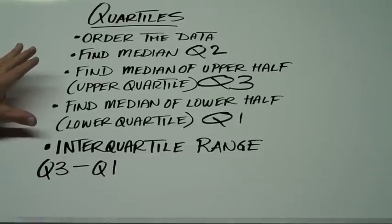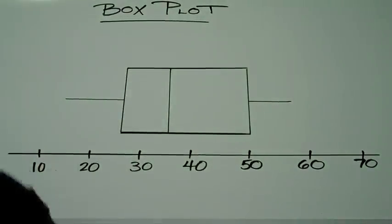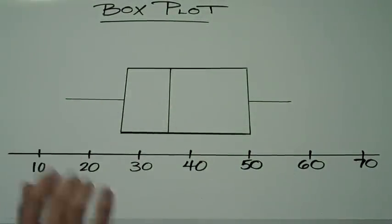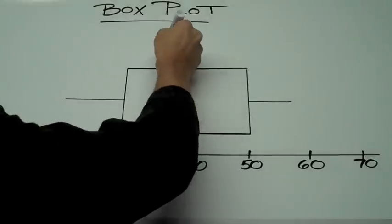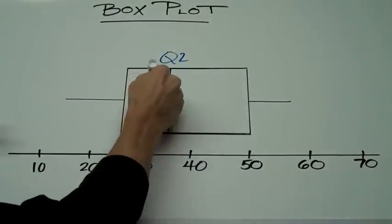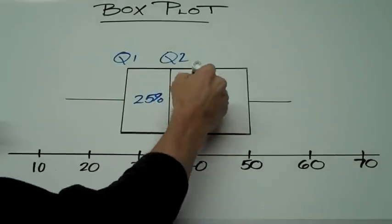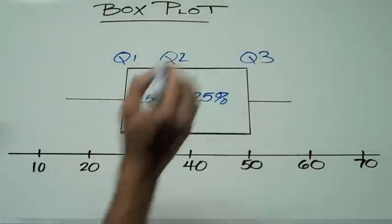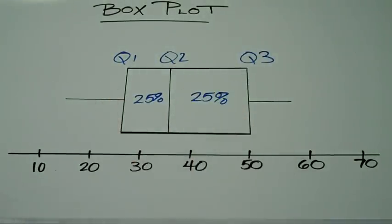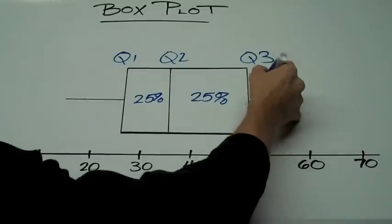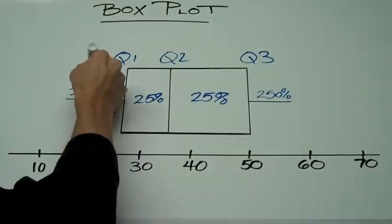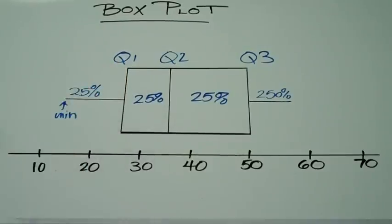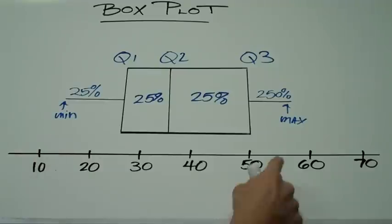The quartile system goes hand-in-hand with a box plot. Here's a box plot for a given set of data. At the center line we have quartile 2, or the median of the data, with 25% of the data in the Q1 region and 25% in the Q3 region. To find the interquartile range, I would take 50 minus 26, giving an interquartile range of about 24. The minimum is represented by the end of the left whisker and the maximum by the end of the right whisker, so the data goes from about 11 to about 57.